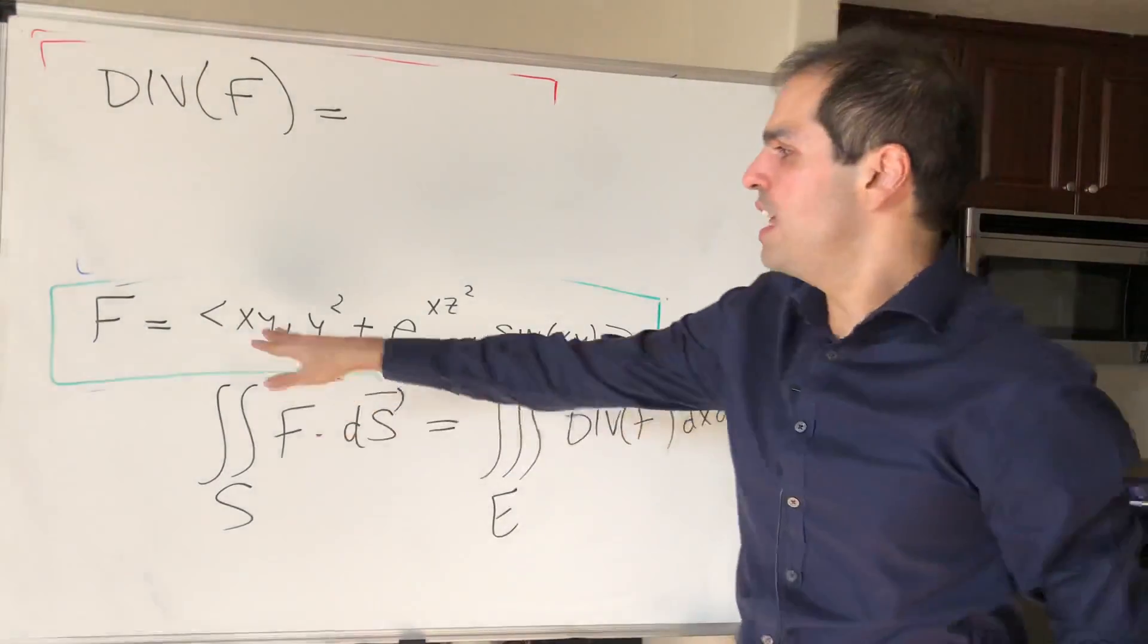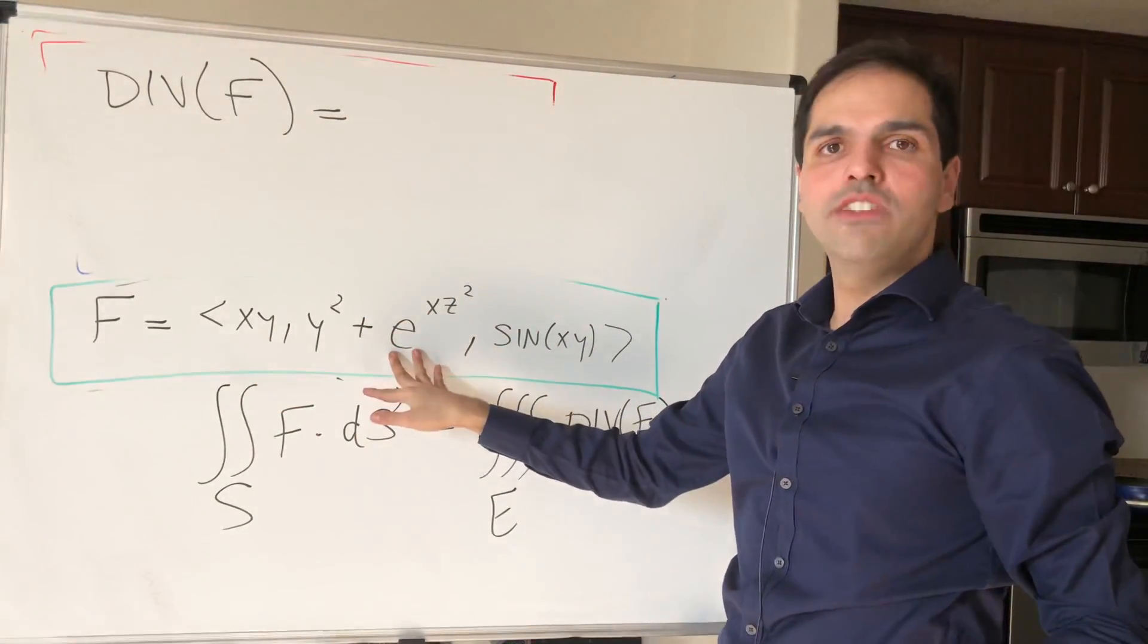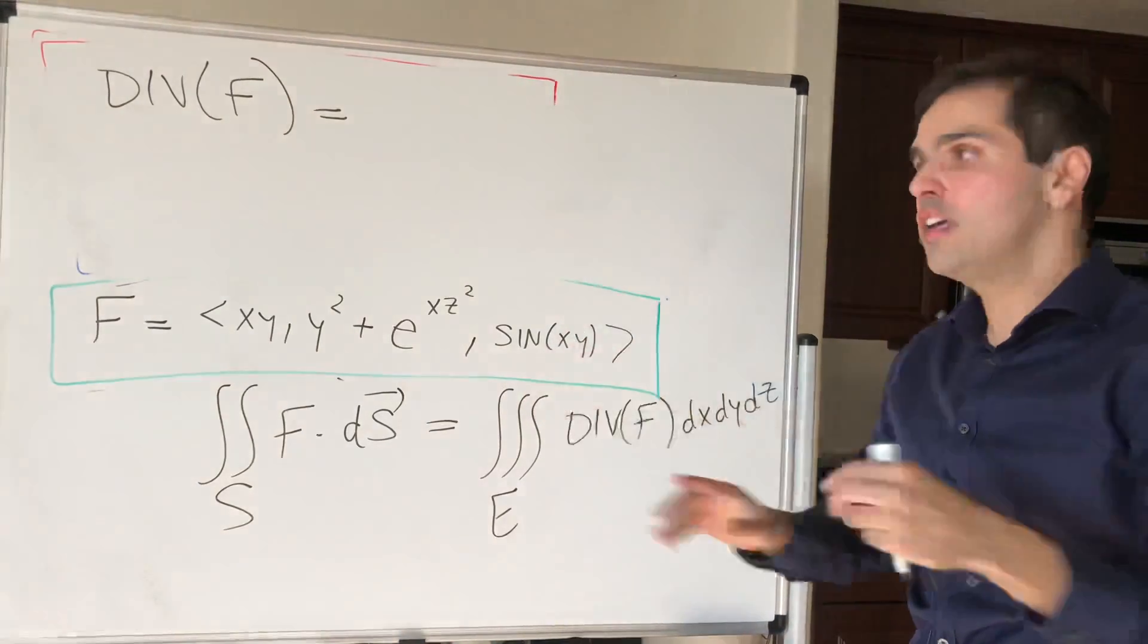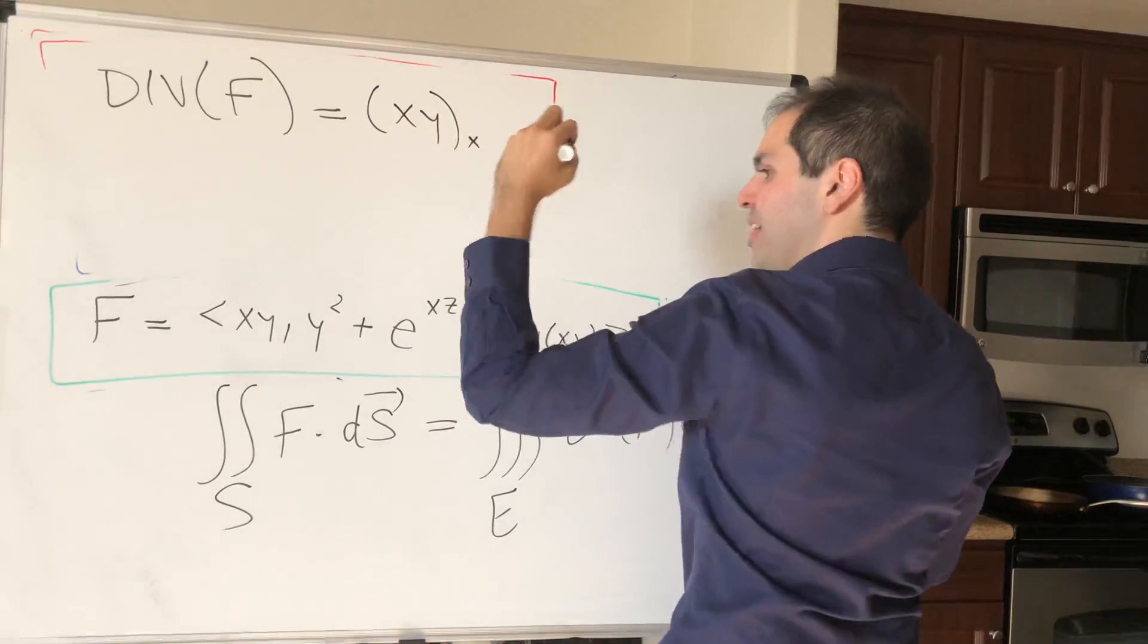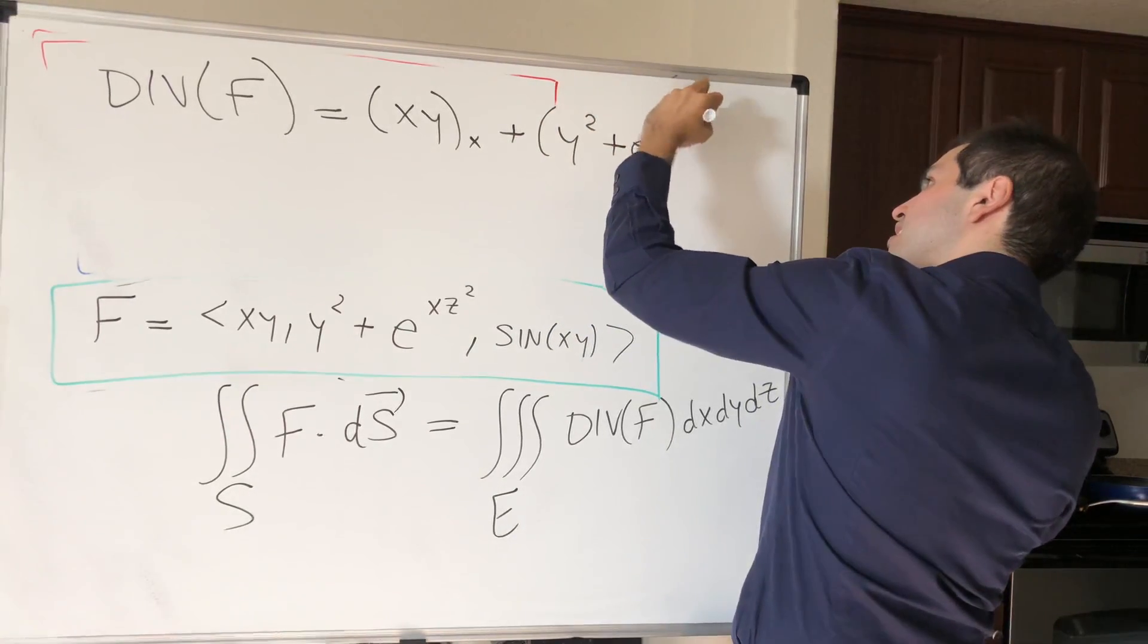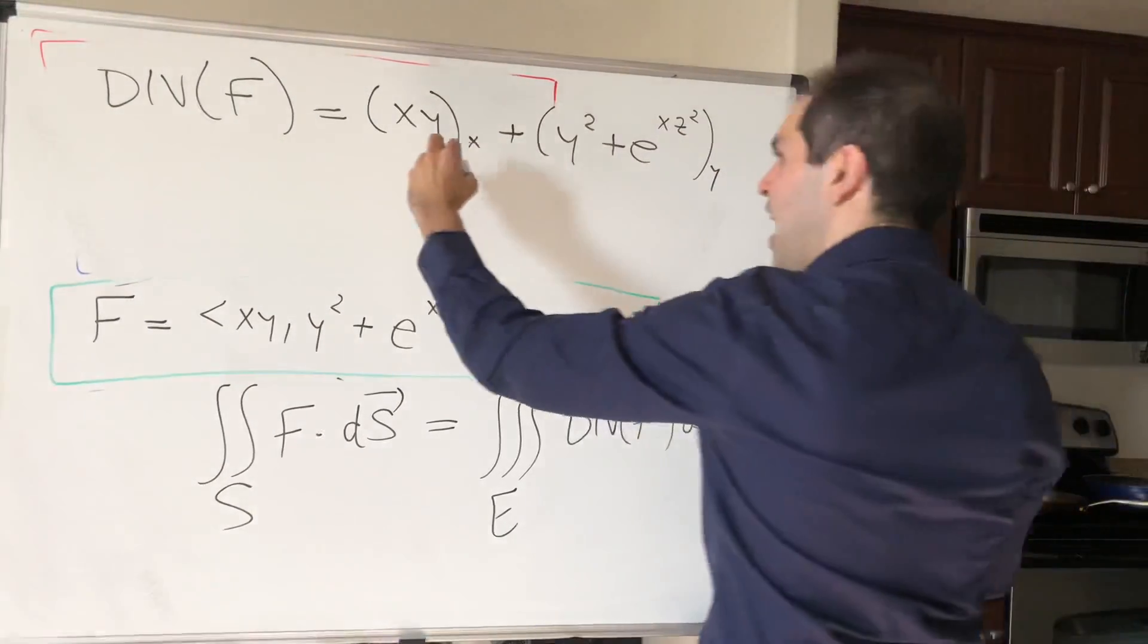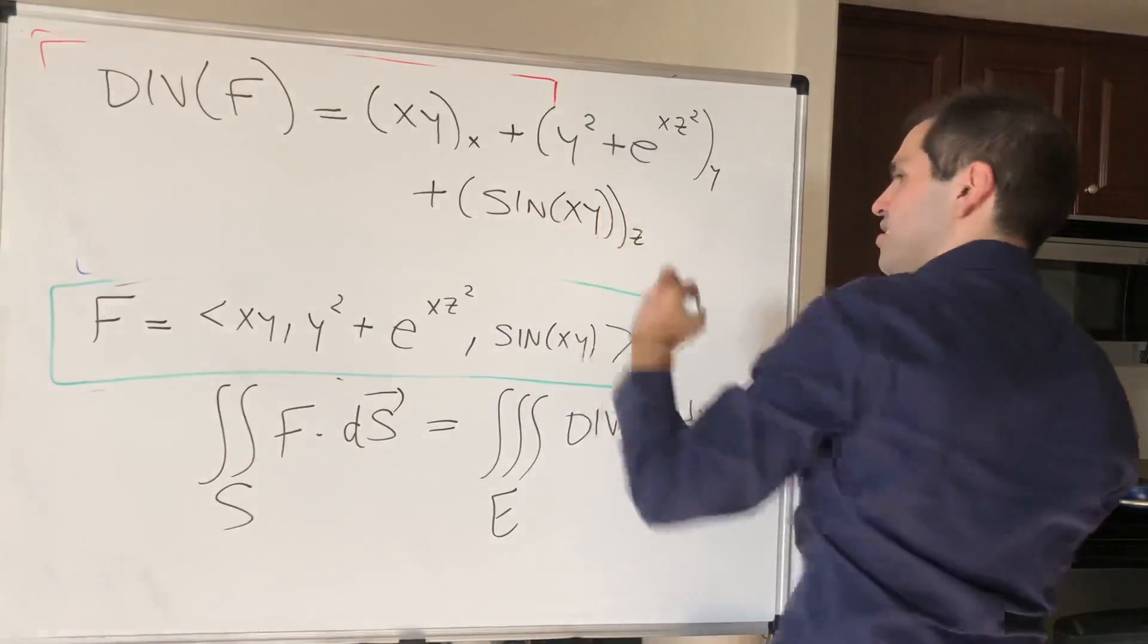All it means is you take the x derivative of the first component, the y derivative of the second one, and the z derivative of the last one, and add those together. So it becomes xy with respect to x plus y squared plus e to the xz squared with respect to y plus sine of xy with respect to z.